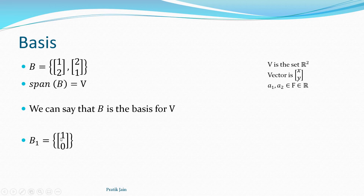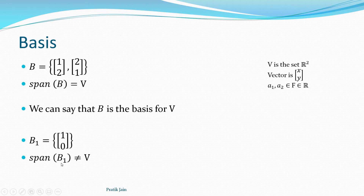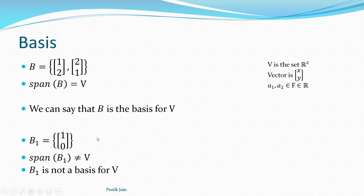Let's take another example: say B1 is just one vector (1,0) with the same vector space R². B1 cannot represent the entire vector space because it will only lie on the x-axis — you can only scale it and move on the x-axis, you can never go into the y-axis. Because of that, B1 is not a basis since the span of B1 is not equal to the entire vector space V.